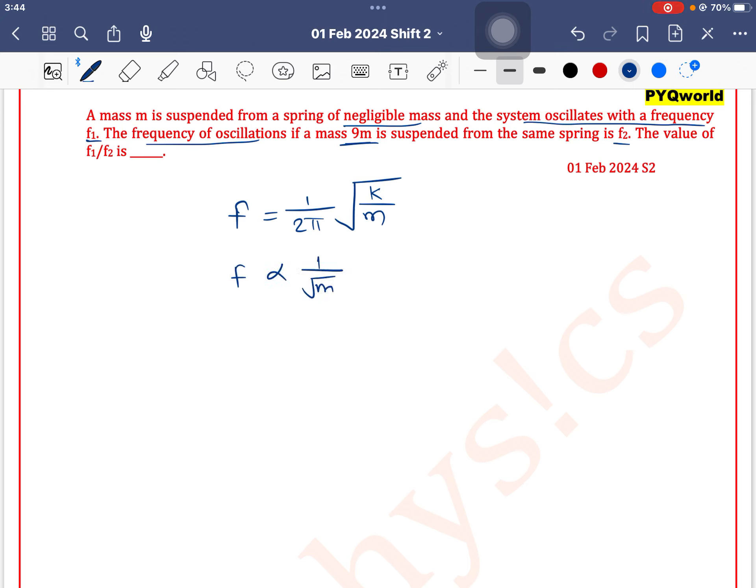So we can write f1/f2 = √(m2/m1). The initial mass is m, the final mass is 9m. The m values cancel out, so √9 = 3. The answer is 3.